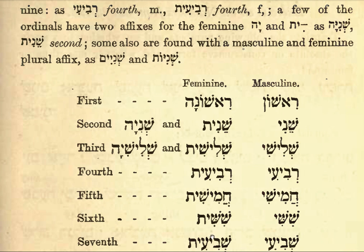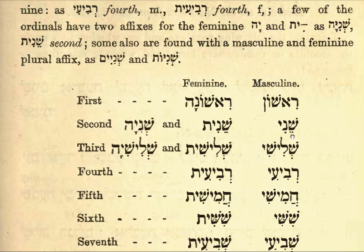Here is our feminine column, here is our masculine column. First: feminine Rishona, masculine Rishon. Second has two forms, as we just saw: feminine Shniya and Shniyot, masculine Shniyim.